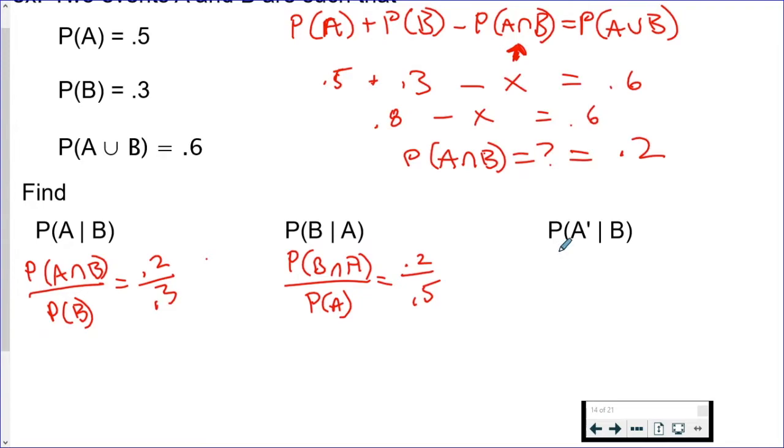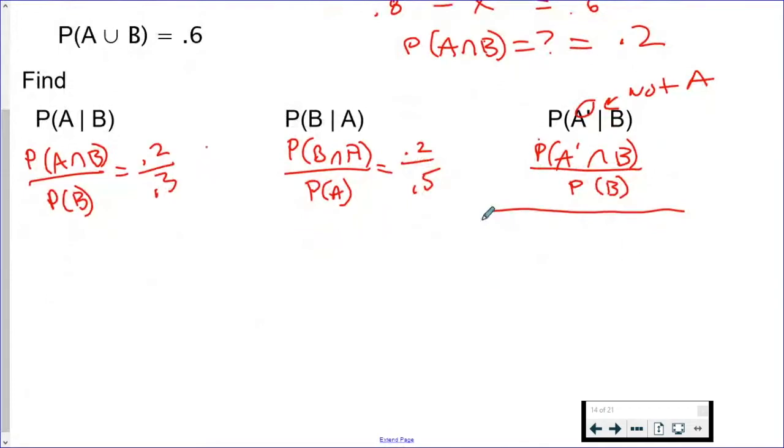Now this one requires a little bit of thinking. Remember that means not A. So what I want to know is this: probability of not A intersect B over probability of B. So here I'm going to use a Venn diagram to show this.